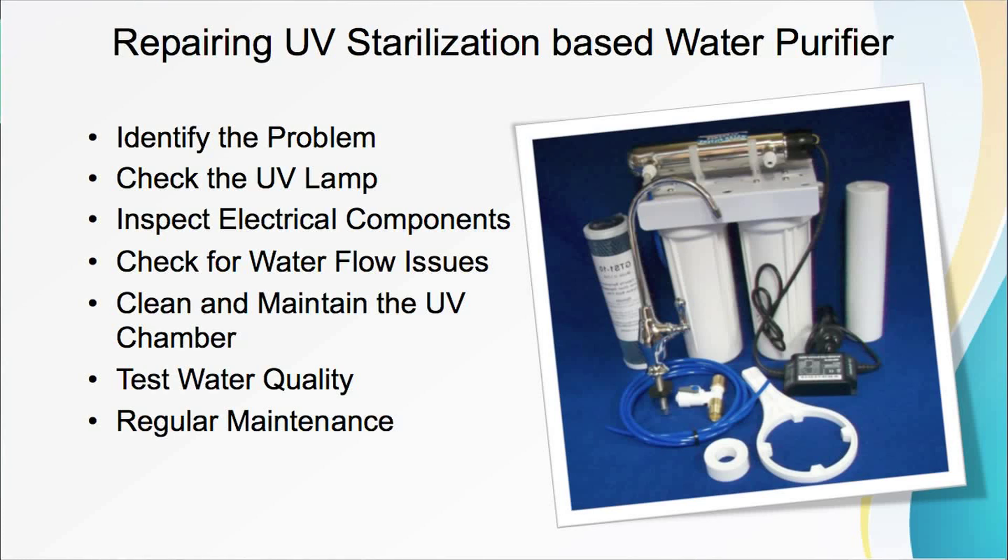Next step: check the UV lamp. The UV lamp is a critical component of the system. Inspect it for signs of damage or wear. If the UV lamp is not lit, check the lamp itself and the connections. Replace the lamp if it is old or damaged. Be sure to handle UV lamps with gloves and avoid touching the glass surface with your bare hands, as skin oils can affect lamp performance. Use soft cloths or tissue to handle the lamp.